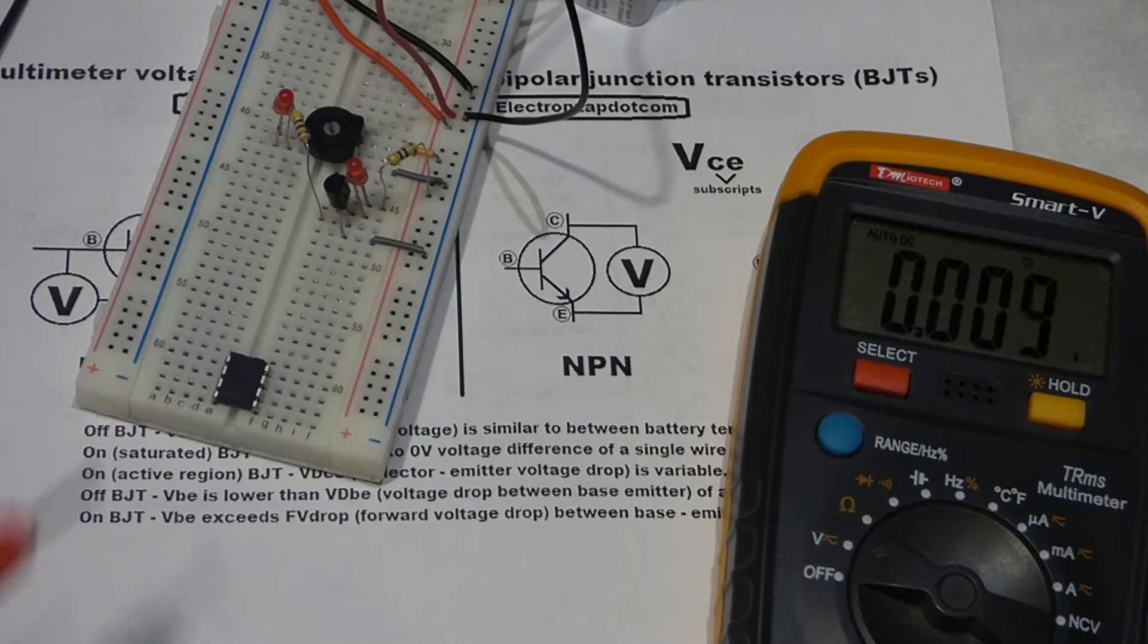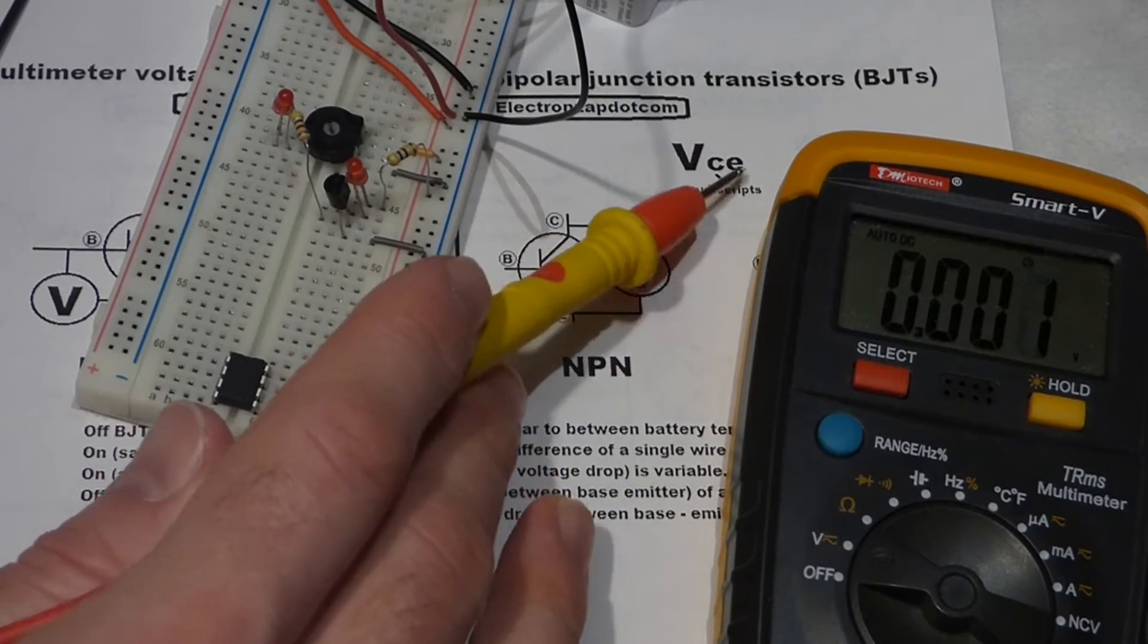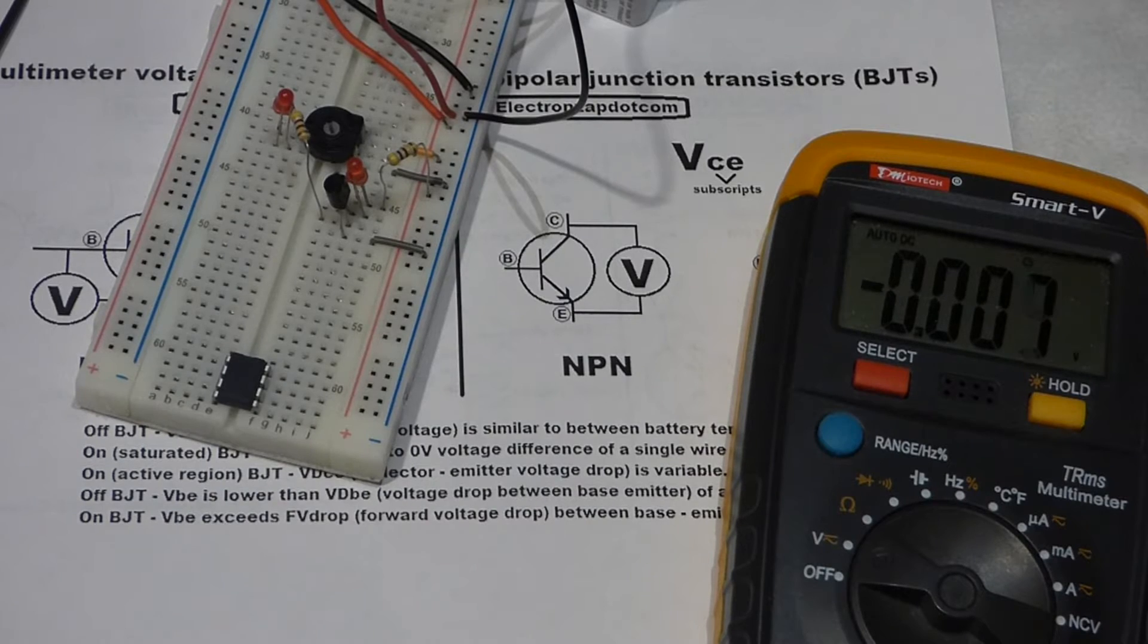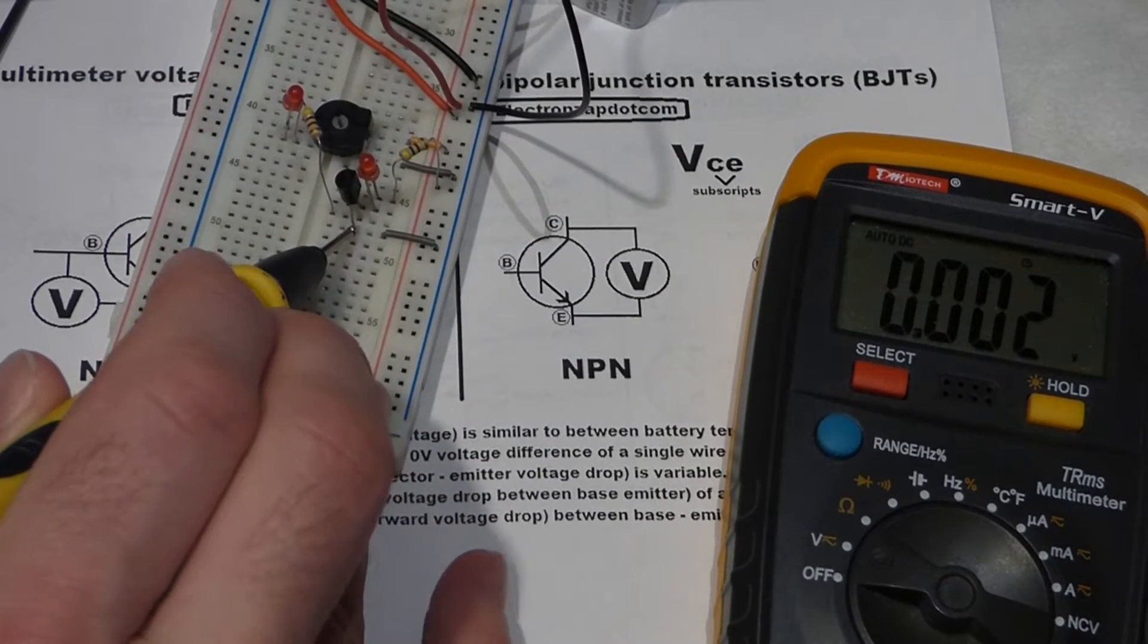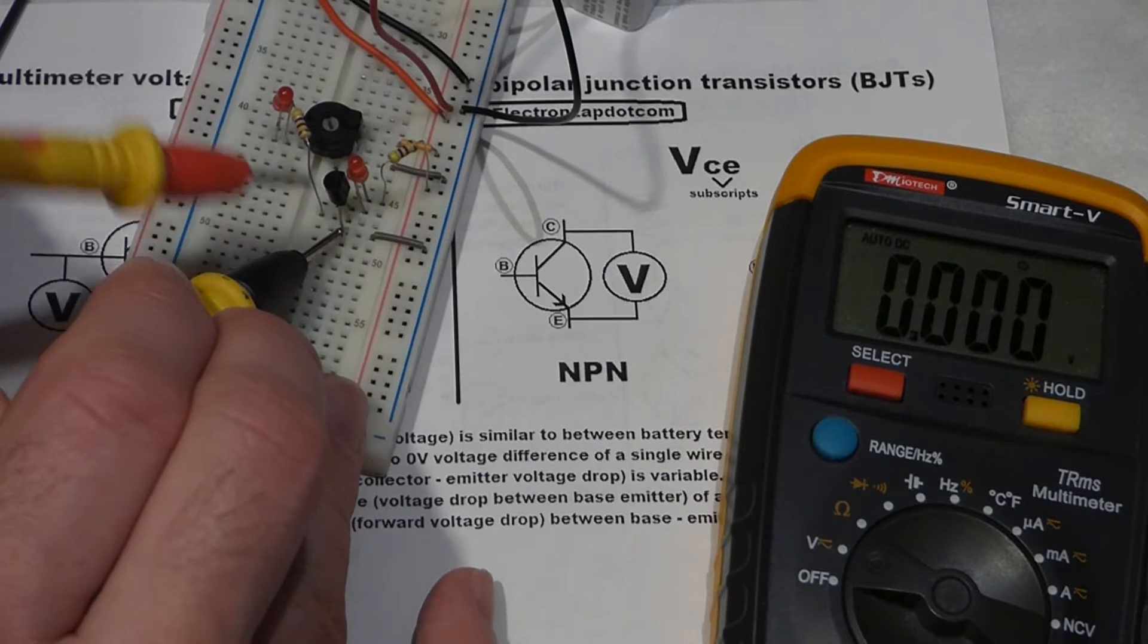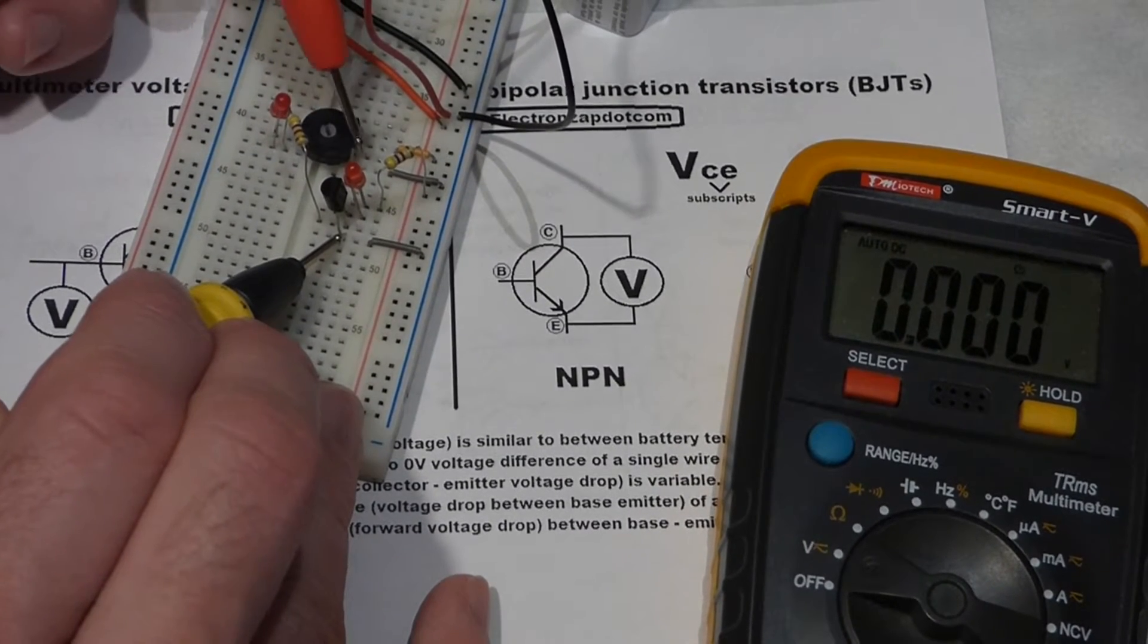We're going to start off taking a voltage reading of the voltage across the collector and the emitter. I have a 9 volt battery plugged into the rail now. The black probe of the multimeter goes to the emitter of the transistor, NPN transistor, flat side to the right. And that means the collector's on top.